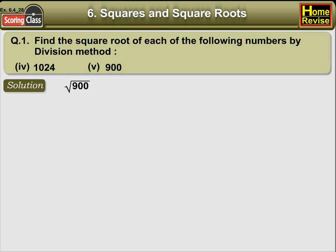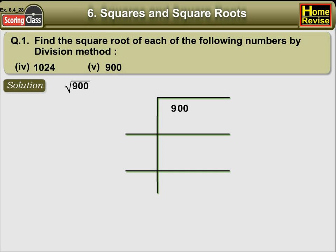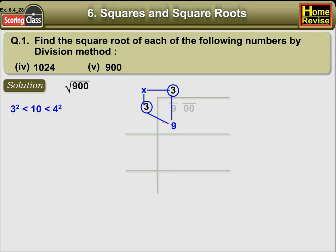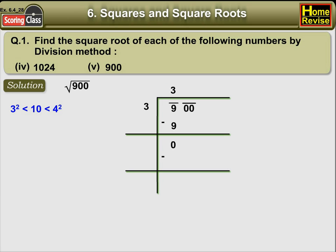Solution: square root of 900. Starting from the unit's place, let us take two digits together. In this case, it becomes 00 and 9. Now, let us find the largest number whose square is less than or equal to the number under the extreme left bar. In this case, we have 9. 3 into 3 is equal to 9. So, we will take 3 as our divisor and the quotient will also become 3. Therefore, 9 minus 9 is equal to 0, so our remainder is 0. Now, let us carry forward the remaining term under the bar, which is 00.